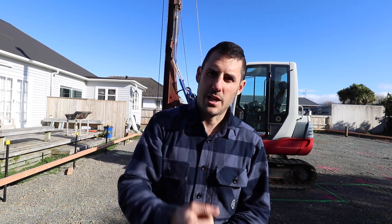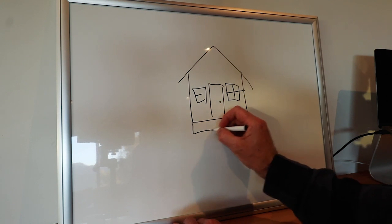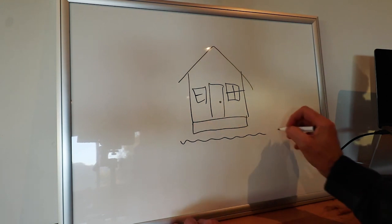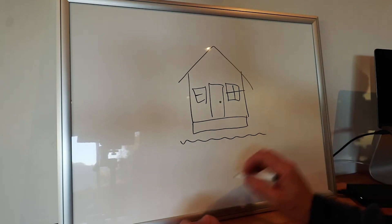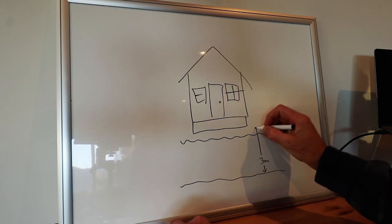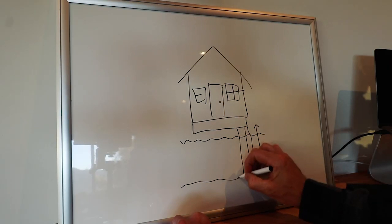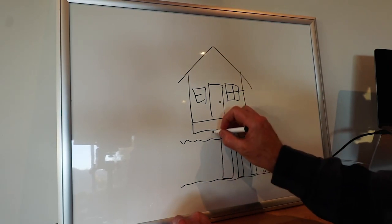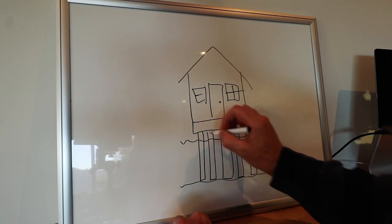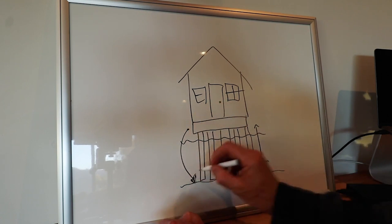Behind me is a pile driver, so we smash the piles down until we hit good ground. On this site here it's about three meters. Imagine this was your house — we would put a concrete foundation under it and good ground would normally be 300 to 600 mils away. But in this instance good ground is over three meters away from the floor. So you drive a bunch of timber piles under the foundation all the way down to the good ground or rock at the bottom, and the timber piles transfer the load all the way down.